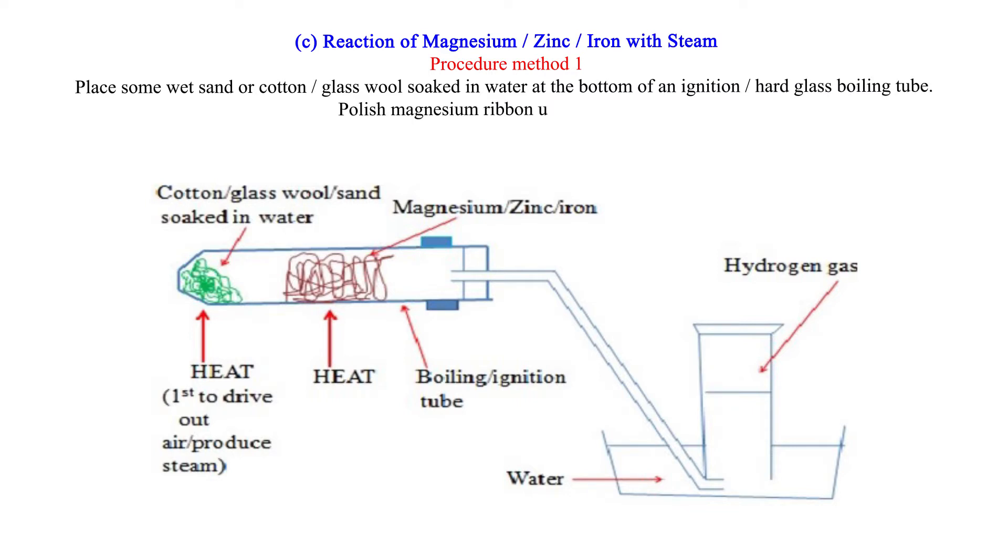Polish magnesium ribbon using sandpaper. Coil it at the center of the ignition or hard glass boiling tube. Set up the apparatus as below.